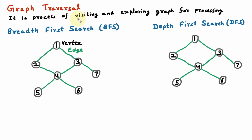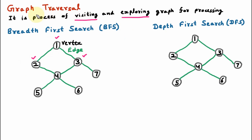In the definition of graph traversal there are two things. First is visiting the vertex, that means we are going to any vertex — let us suppose vertex 1. So this is called visiting the vertex. The second thing is exploring the vertex: finding its neighbors, just like 2 and 3, which are the neighbors of vertex 1. So visiting the vertex and exploring — that means finding its neighbors — is called graph traversal.